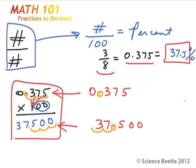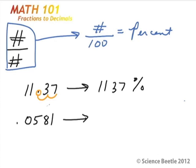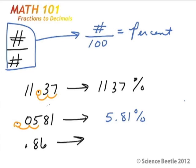Let's practice the shortcut. If I give you 11.37, you just move the decimal two spaces to the right — that gives you 1,137 percent. What about 0.0581? Move the decimal two spaces right — that gives you 5.81 percent. One more: 0.86 — move two spaces right — that's 86 percent. It's very easy once you know this shortcut to convert a decimal to a percent.